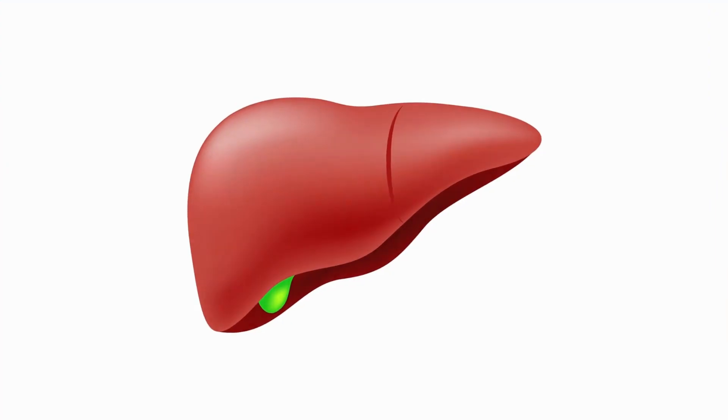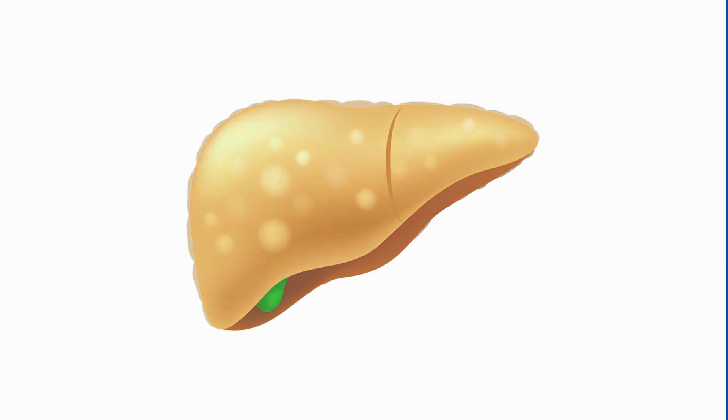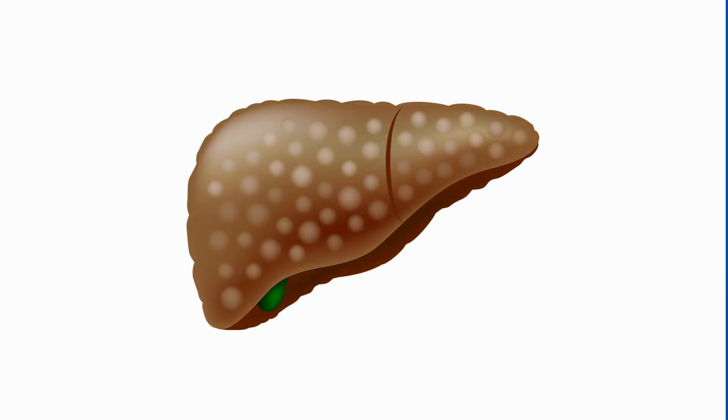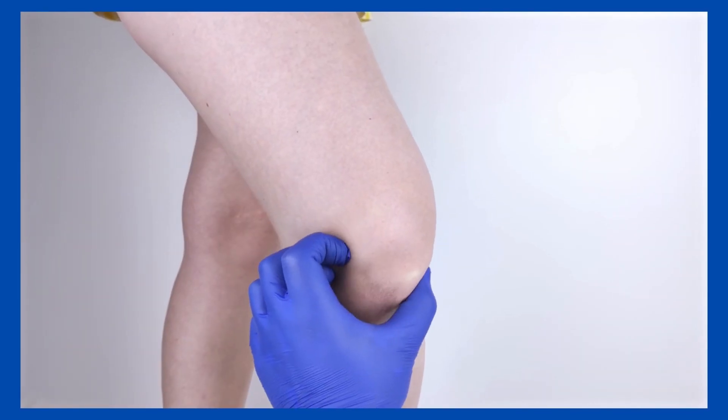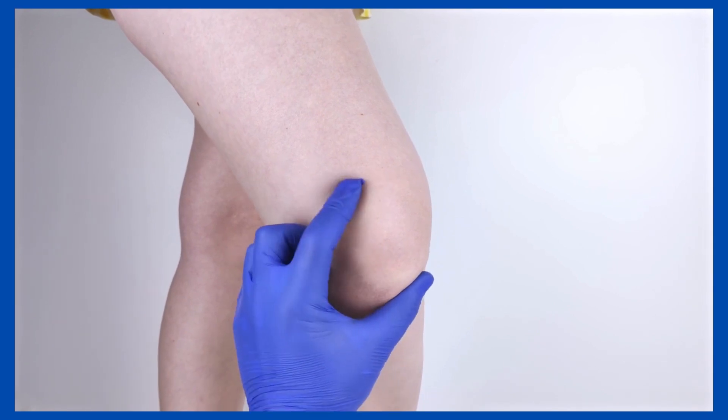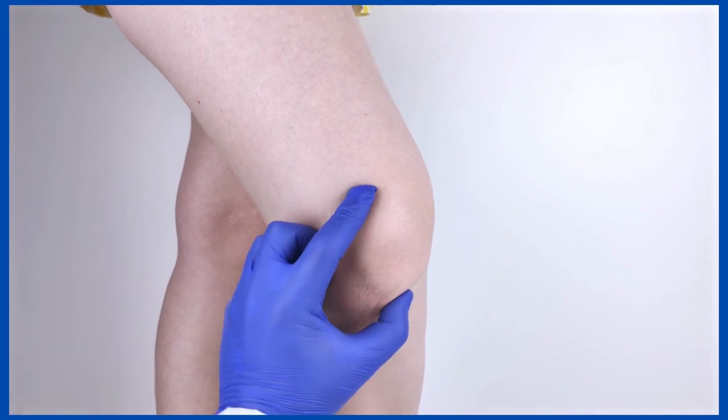If cirrhosis, which is the most advanced stage, develops, you might have yellowing of the skin and the whites of the eyes, itchy skin, and swelling in the legs, ankles, feet, or tummy.